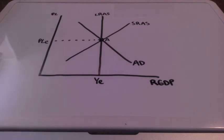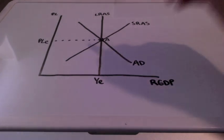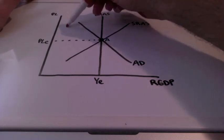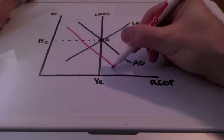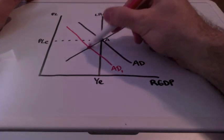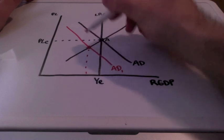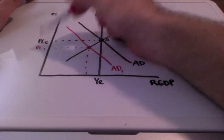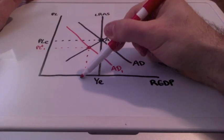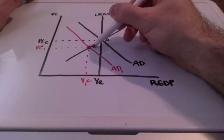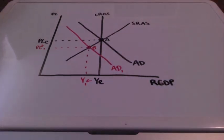In this example, we are going to start off once again in long run equilibrium, represented by point A. But this time, we are going to go through contractionary fiscal or monetary policy, which is going to shift the aggregate demand curve to the left, moving from AD to AD1. This is going to drive both price level and real GDP down — price level moving to price level 1 and GDP moving to GDP 1. We are moving from point A to point B, which is once again a short run economic fluctuation.